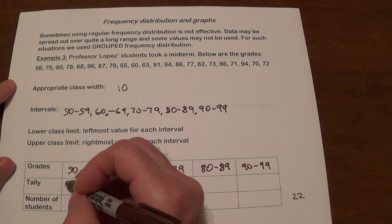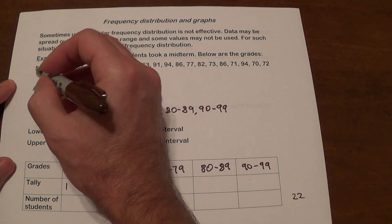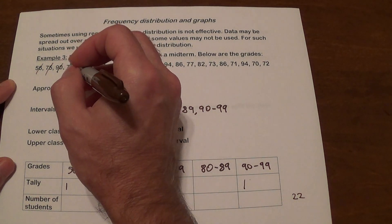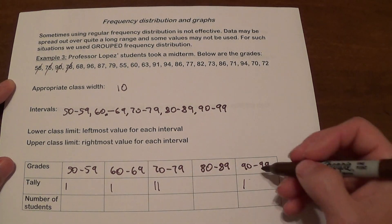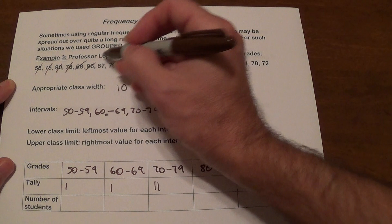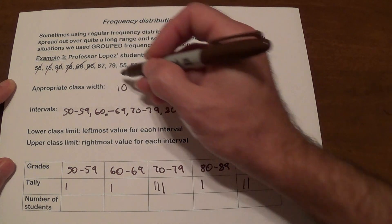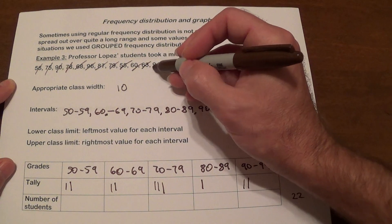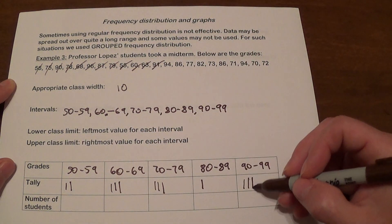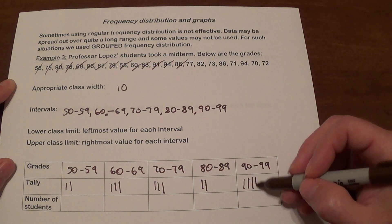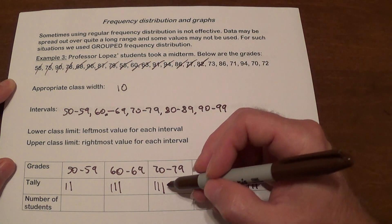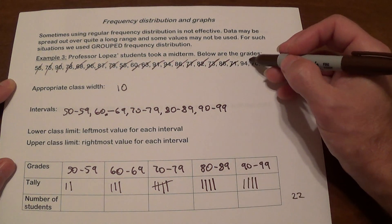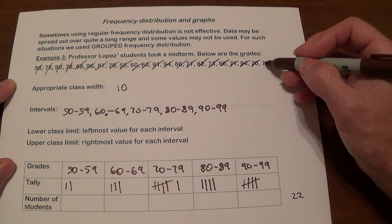And let's go ahead and start. So 56, 75, 90, 78, 68, 96, 87, 79, 55, and 60, 63, 91, 94, 86, 77, 82, 73, 86, 71, 94, 70, 72.